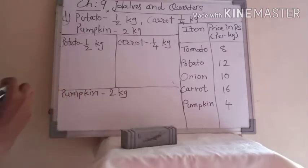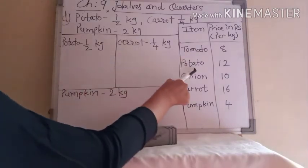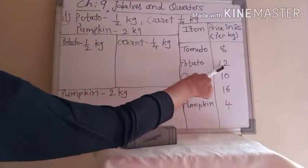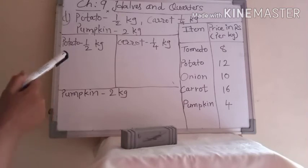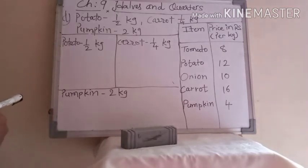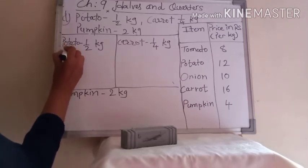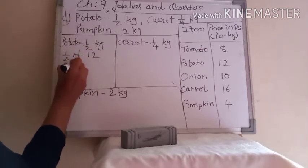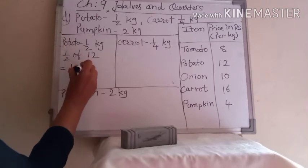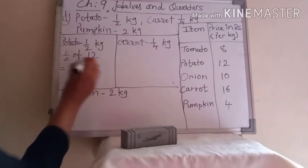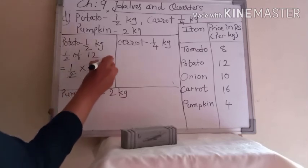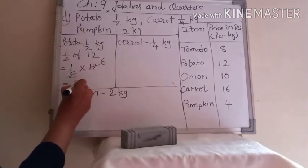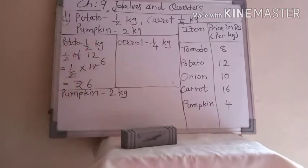So first we have to find the price of each item. Potato half kg — 1 kg price is 12 rupees, so half kg is 6. Write here: half of 12 equals 1 upon 2 multiply 12. In the 2 table: 2 sixes are 12. So the price of half kg potato is rupees 6.